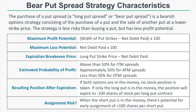The probability of profit for a bear put spread depends on whether the spread is in the money, at the money, or out of the money. If you buy an entirely in-the-money put spread, the stock price can actually increase and you'll still make money, though you pay more premium and have more loss potential. An at-the-money put spread has approximately 50% probability of profit. An out-of-the-money put spread has less than 50% probability of profit, because you need the stock price to decrease significantly just to break even.